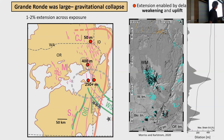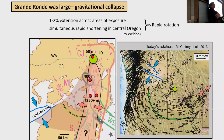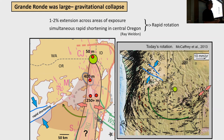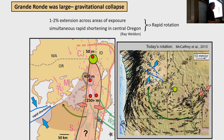Ray Weldon has been working in central Oregon and during the time of the Grand Ronde eruptions he's seen rapid shortening there. Kinematically it looks like extension to the east and contraction to the west — a wedge rotating out. It looks like eastern Oregon is sliding off and compressing the area to the west, though not pushing all of Oregon over the subduction zone.